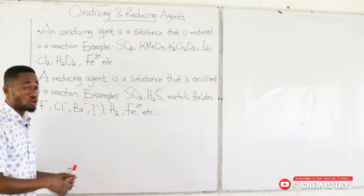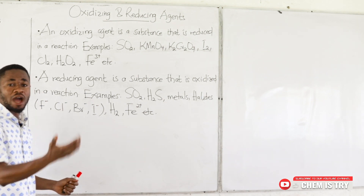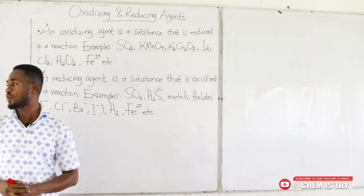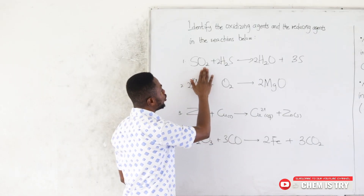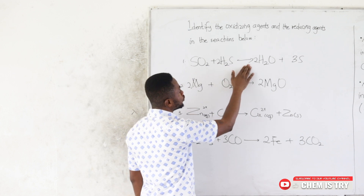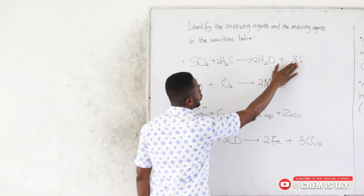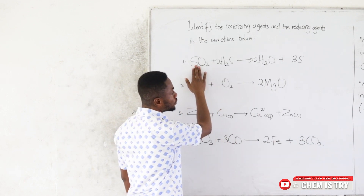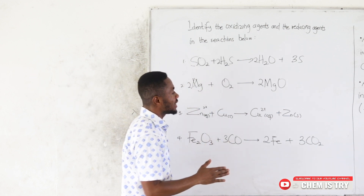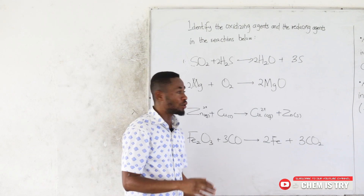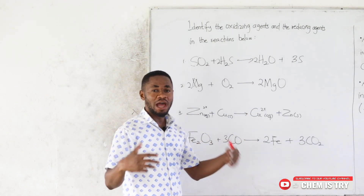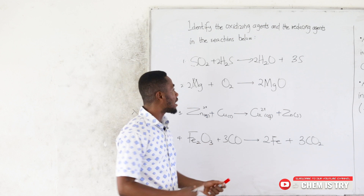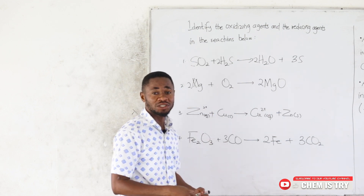Let's look at some examples. In the first reaction: SO₂ + H₂S → 2H₂O + 3S. Let's assume we don't know which is the oxidizing agent and which is the reducing agent, and work it out by finding the oxidation numbers of all species involved.